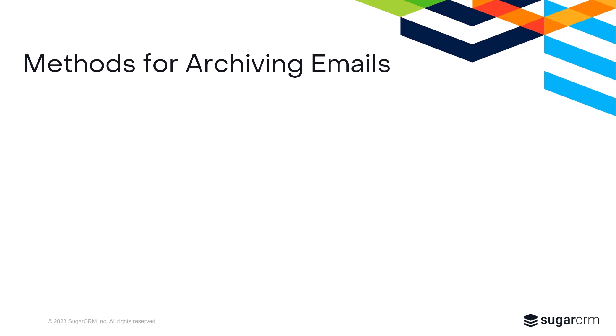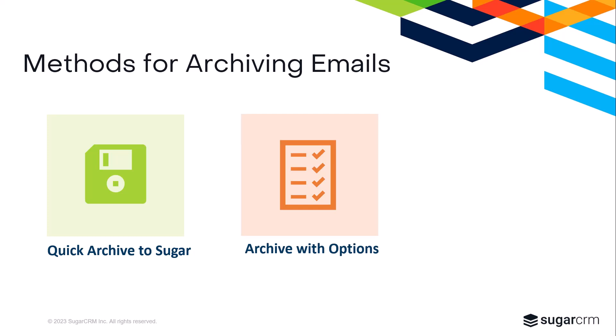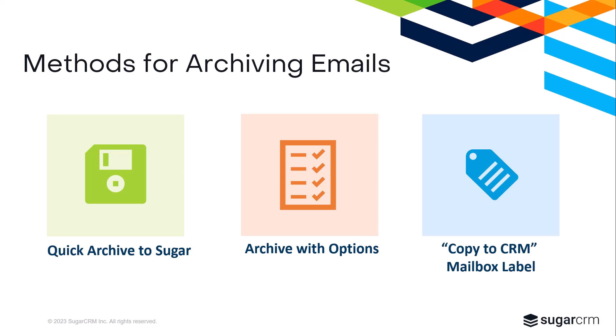There are a few ways you can archive emails in Gmail. You can do a quick archive, which will instantly archive the email and its attachments to Sugar and relate the email to the Sugar record with a matching email address. You can also archive with options, which allows you to select which attachments to save and select the Sugar records you want to relate the archived email to. Or you can apply the Copy to CRM Gmail label to quick save one or more messages on the next Sugar sync.